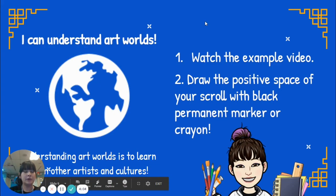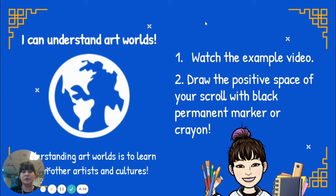Here are today's goals for our project. Our big goal is to understand art worlds — that means to learn art from other artists and cultures. This week we're learning from the great Chinese painters. So after this video, please watch the example art video. This week we're just drawing the positive space of your scroll. Please use black permanent marker or crayon because we're going to be painting over our drawings next week to finish. We're going to paint our negative space next week, so this week you're just doing the drawing part. I hope you have fun making your Chinese scroll. Have a great week!